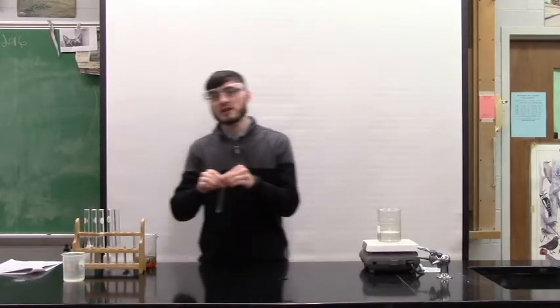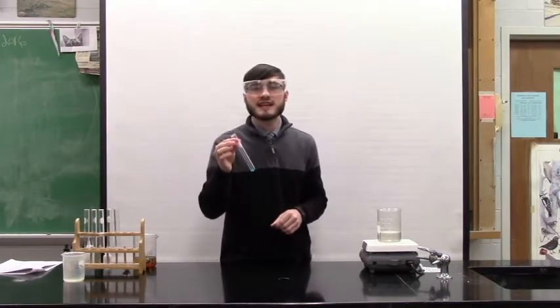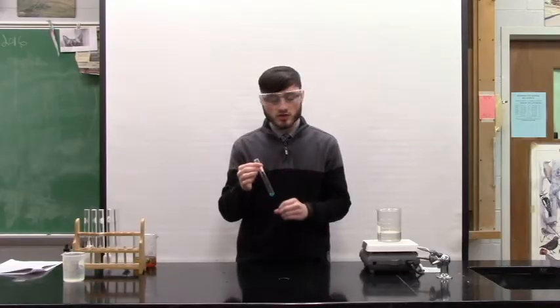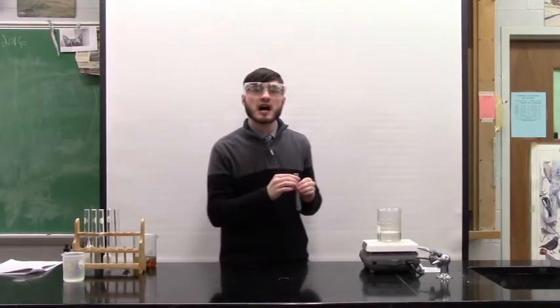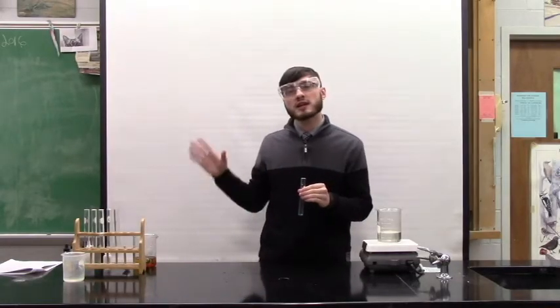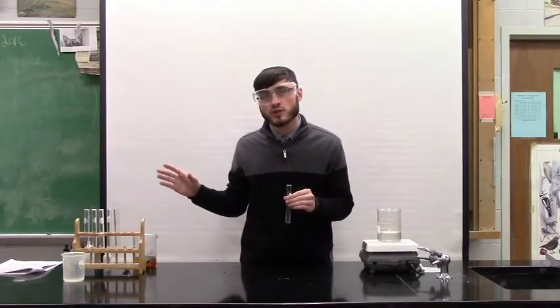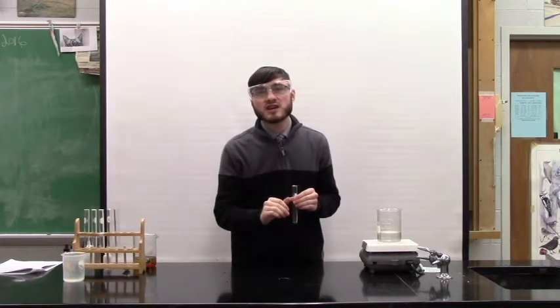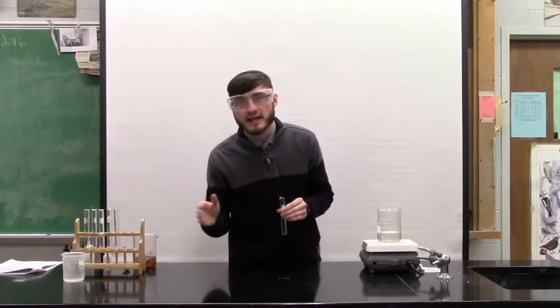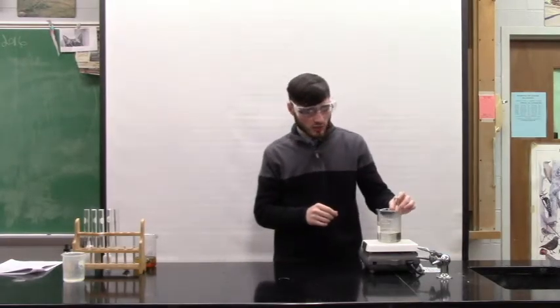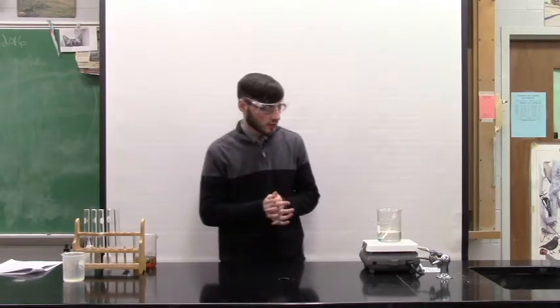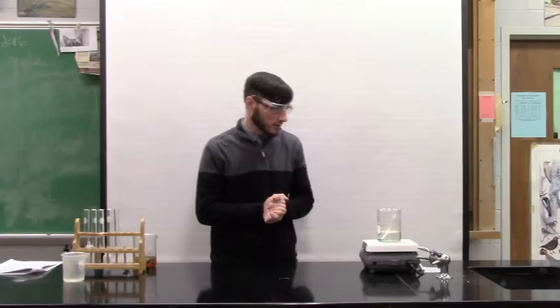Now the thing with Benedict solution or glucose indicator is that in order for us to see an indication of glucose, we have to heat it in a hot water bath. So it's not like the starch indicator solution where we are able to add it and we immediately see that it either stays that amber color or it turns black. This we have to heat it up. So I put it in the hot water bath and we wait and we let it heat up for a little bit.